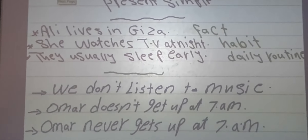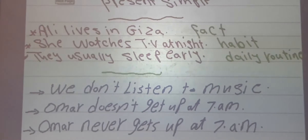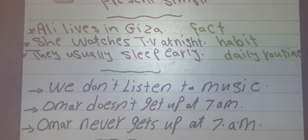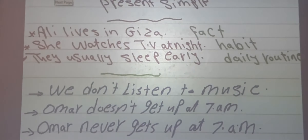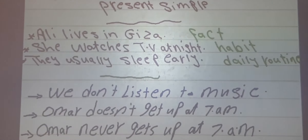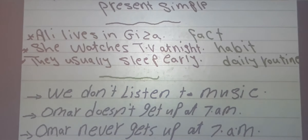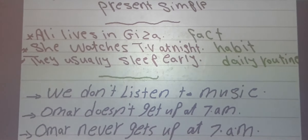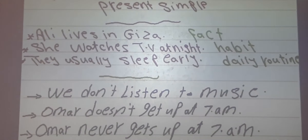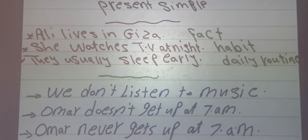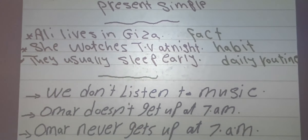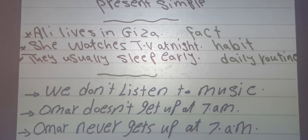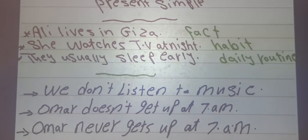Let's see our grammar. Number 1: Present Simple. We use the Present Simple to talk about facts, habits, and daily routines. For example: Ali lives in Nagisa — this refers to a fact. She watches TV at night — this refers to a habit. They usually sleep early — this is a daily routine sentence.